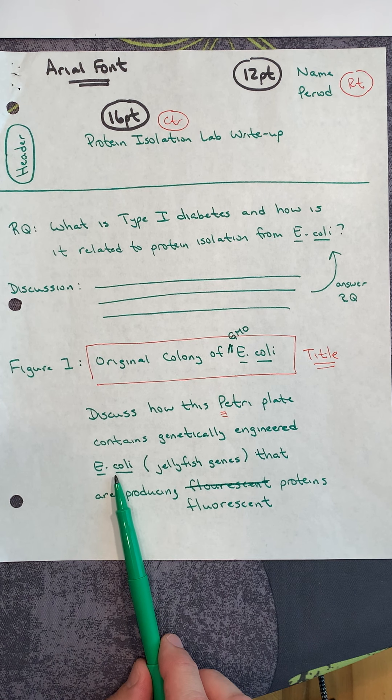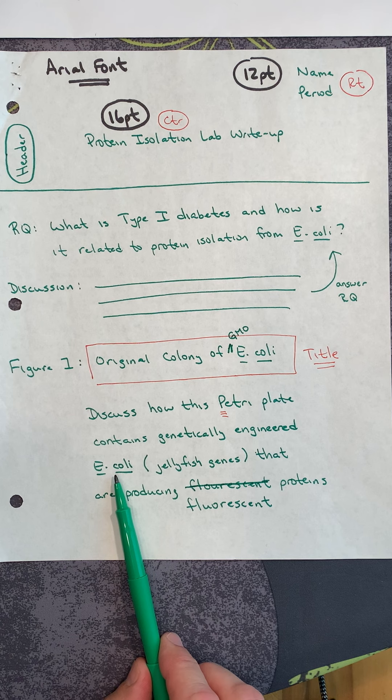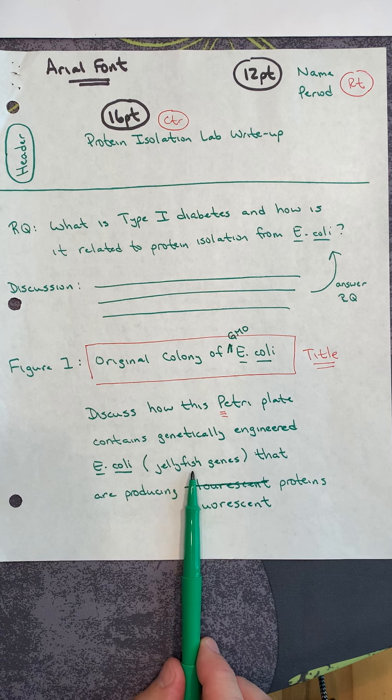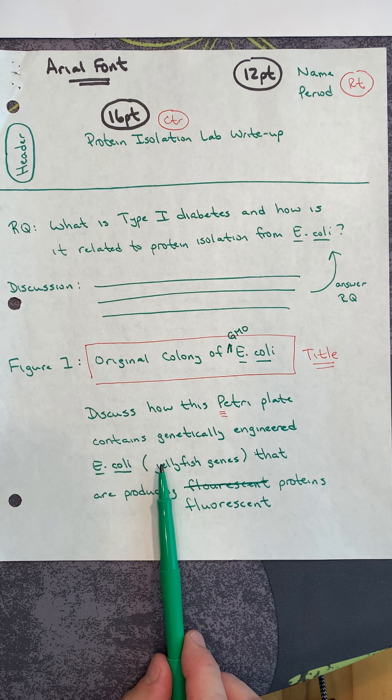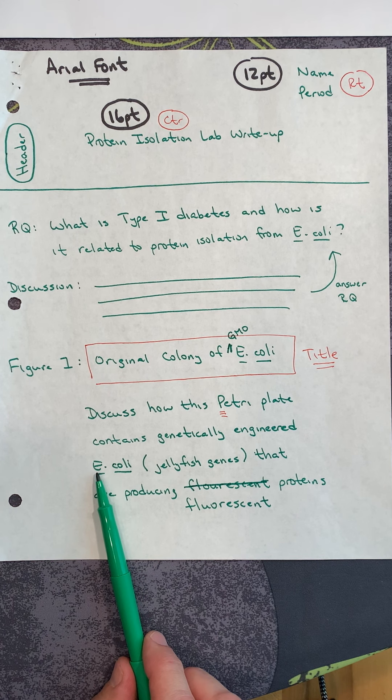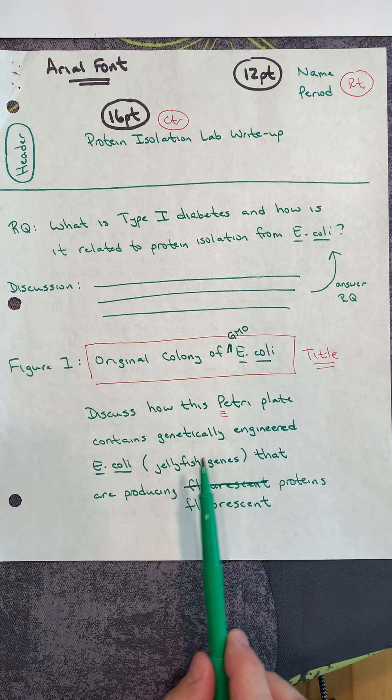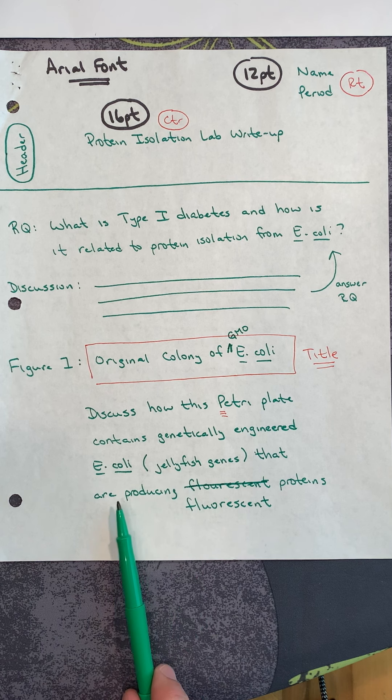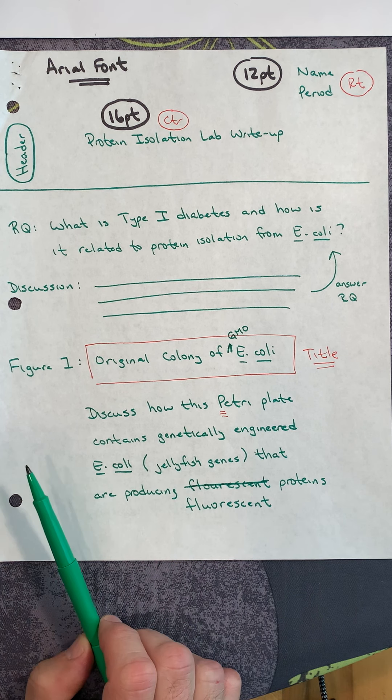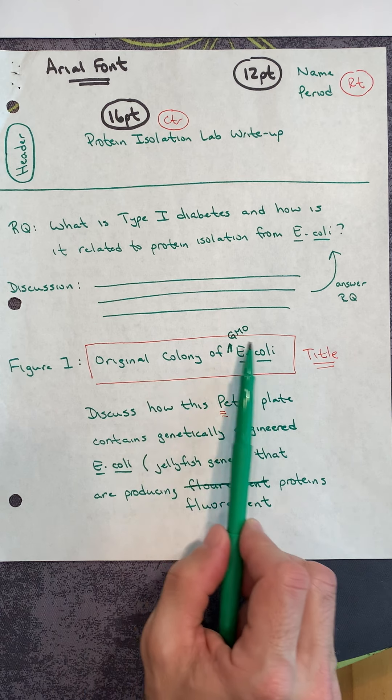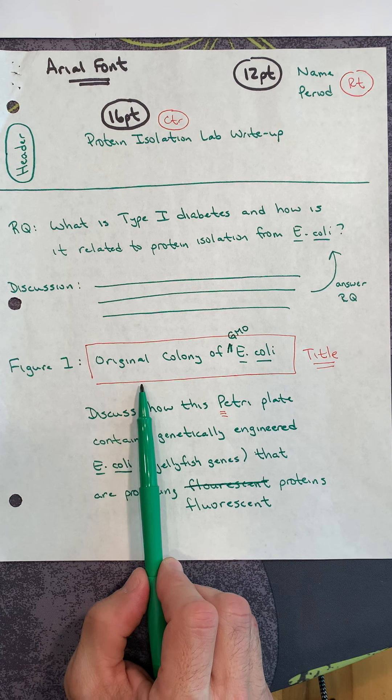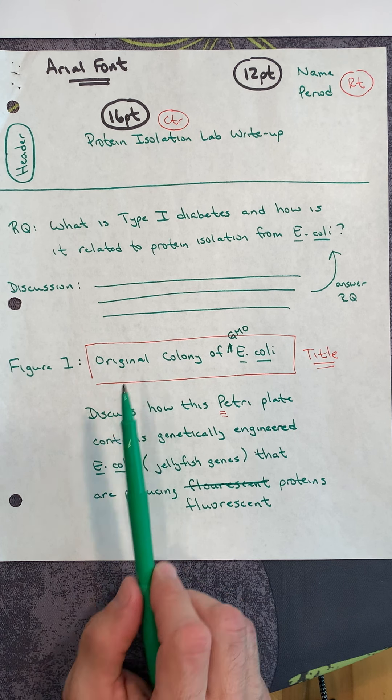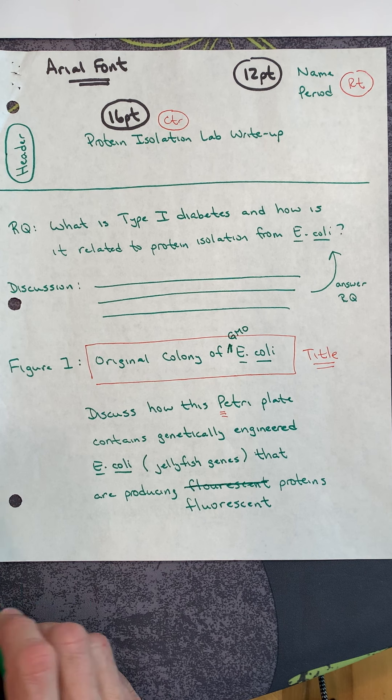Underneath that figure, discuss how this petri plate contains genetically engineered E. coli. I don't want you thinking that the wild type of E. coli is fluorescent. These E. coli had a jellyfish gene put into them. That's why these E. coli are actually GMOs. Discuss how the E. coli contains jellyfish genes that are producing fluorescent proteins.